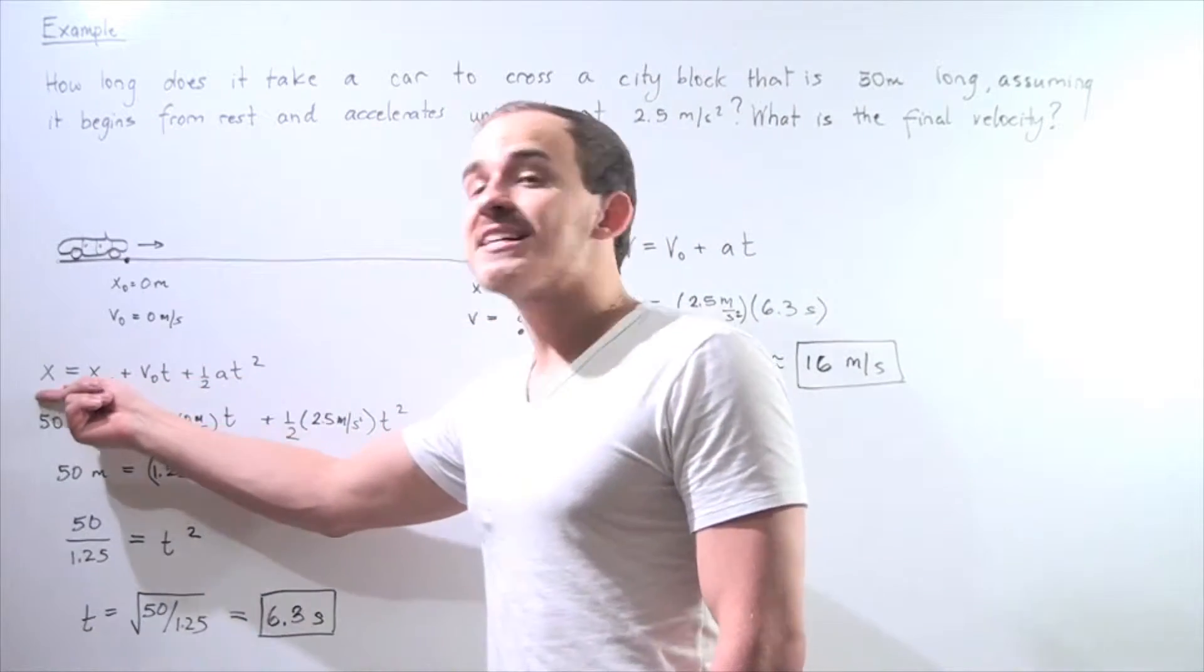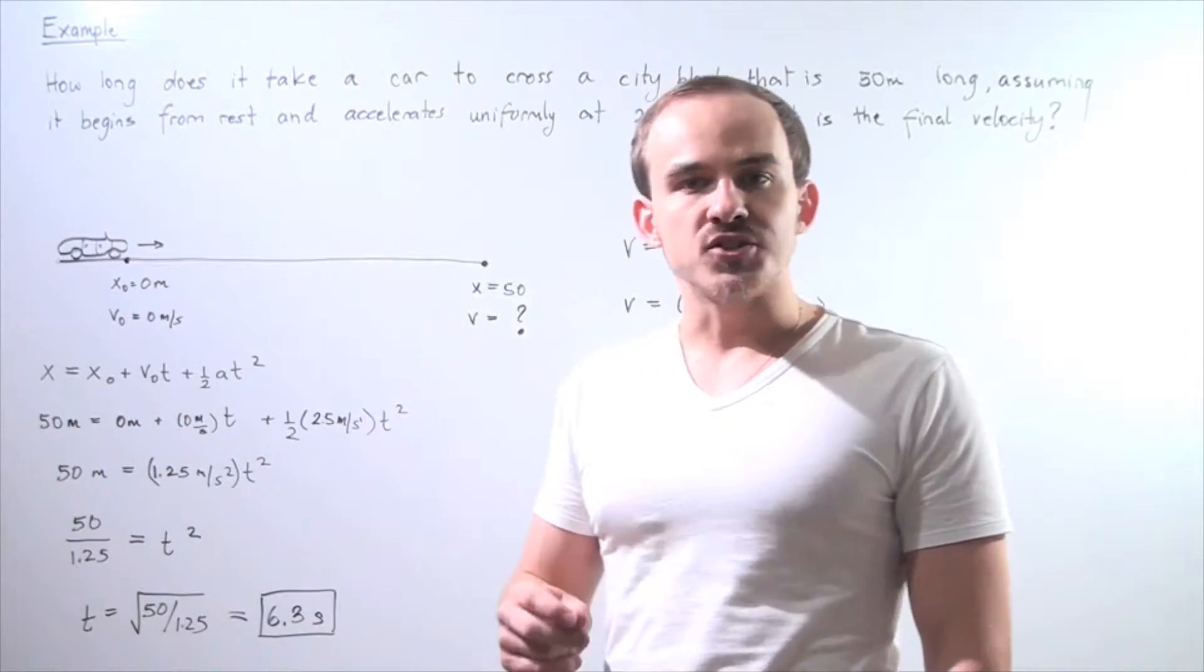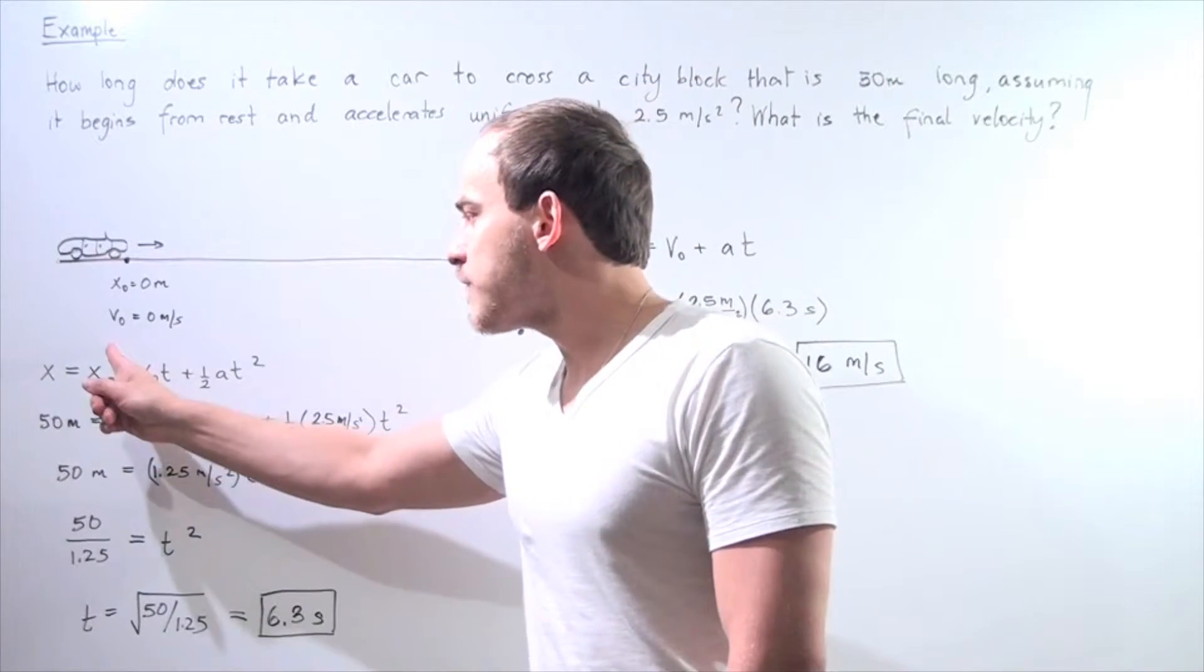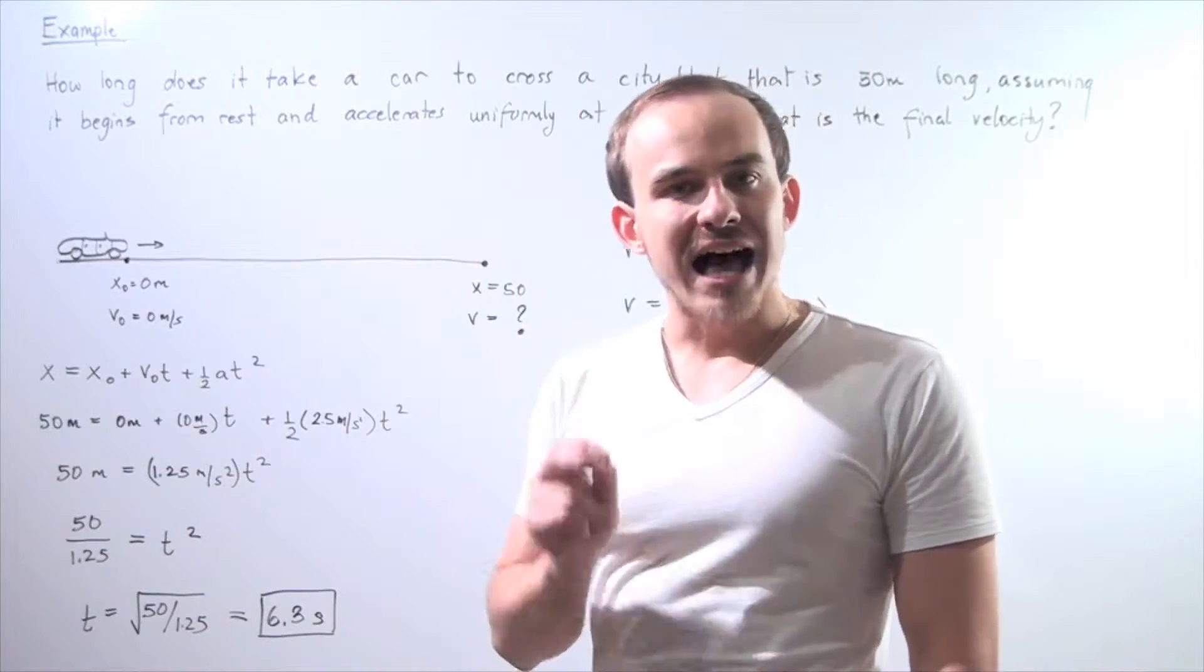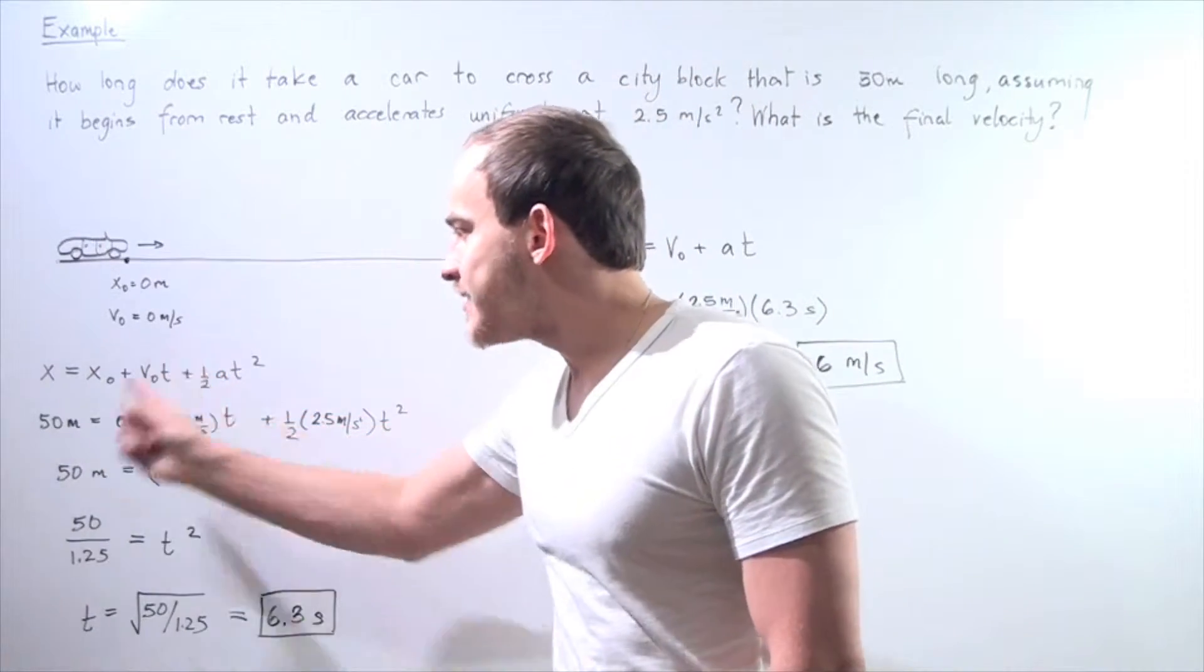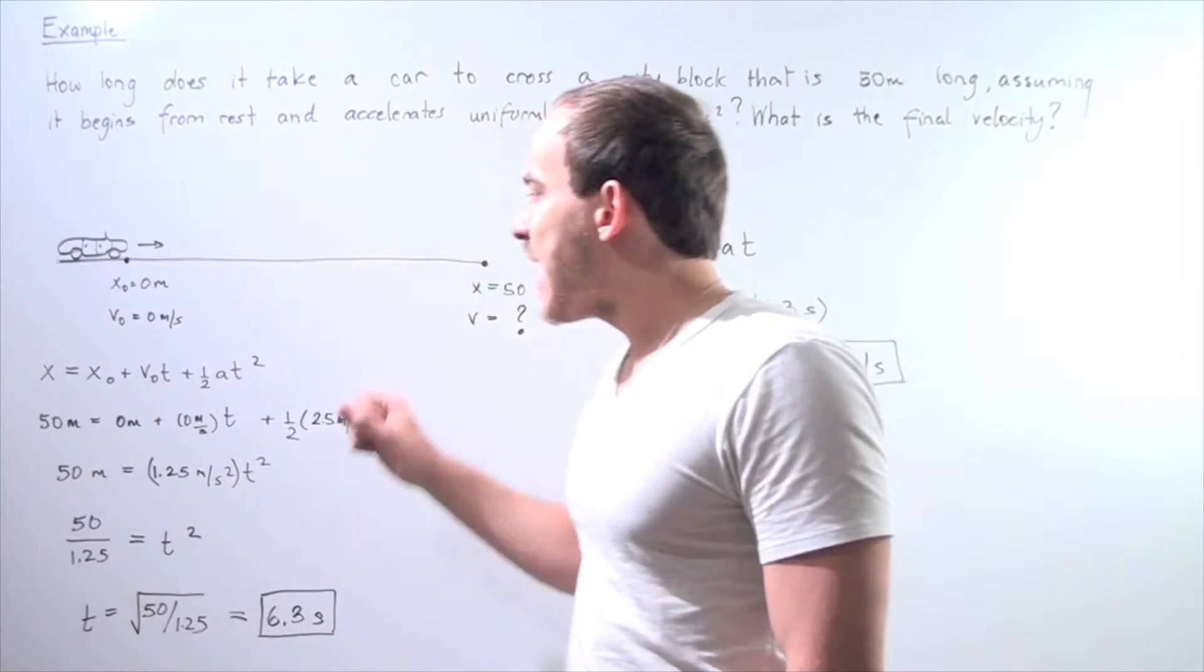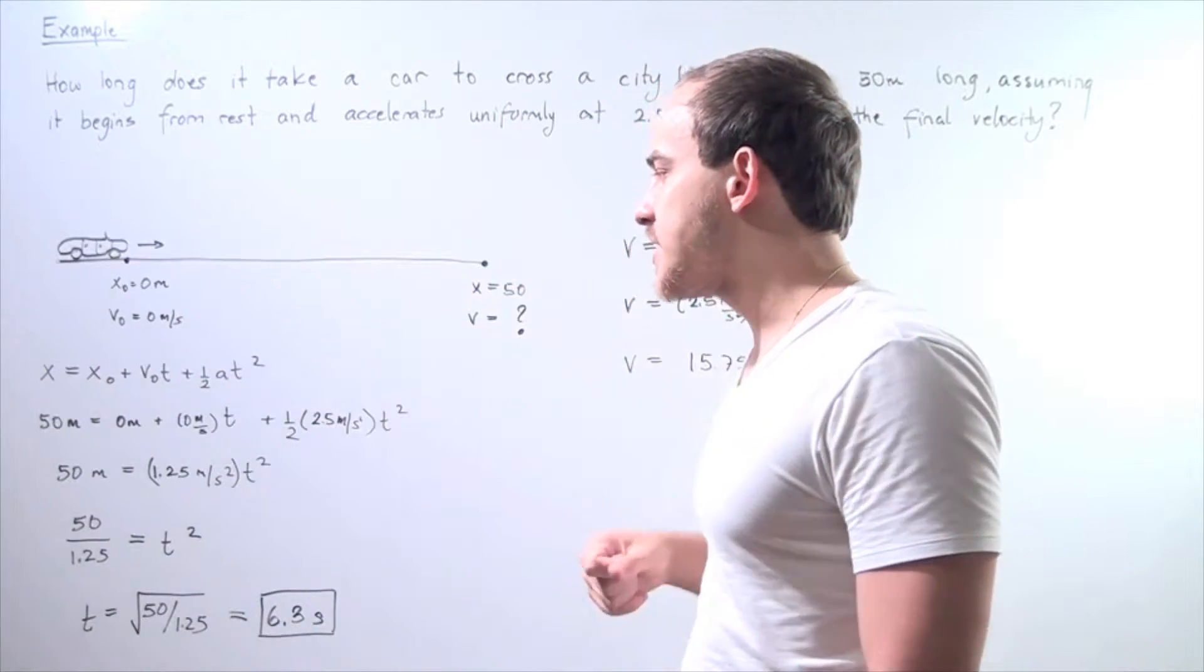We know what our x final is, it's 50 meters. We know what our x initial is, it's 0 meters, so this first term cancels. We know what our initial velocity is, so this entire second term cancels. We're left with one term on each side.